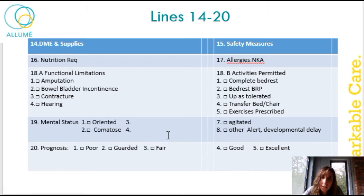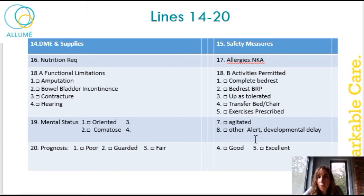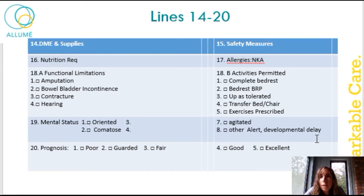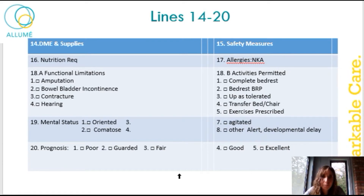Number 19 is the mental status. I just put a few examples here: oriented, comatose, and it goes on from one to eight. Eight is 'other,' and here is where the case managers can write in things that are not necessarily listed on the normal care plan. For instance, this person is alert and they're developmentally delayed — very important to know about your patient.